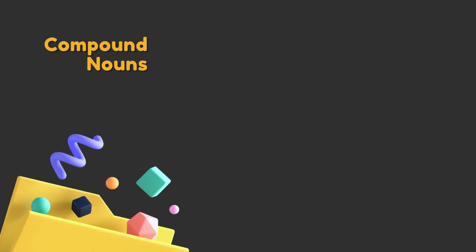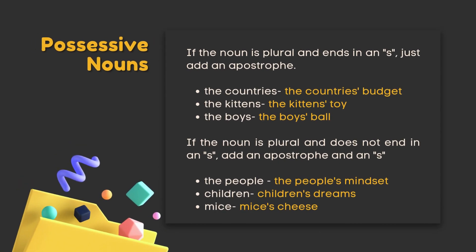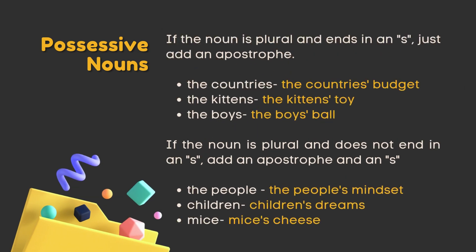Possessive nouns indicate ownership. For singular nouns, add an apostrophe and S after the noun — for example: Kevin → Kevin's pet; the cat → the cat's hat; Billy → Billy's pen. If the noun is plural and ends in S, just add an apostrophe — the country's budget, the kitten's toy, the boy's ball. If the noun is plural and does not end in S, add an apostrophe and S — the people's mindset, children's dreams, mice's cheese. That's all for nouns.